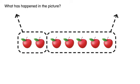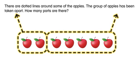What has happened in the picture? There are dotted lines around some of the apples. The group of apples has been taken apart. How many parts are there?